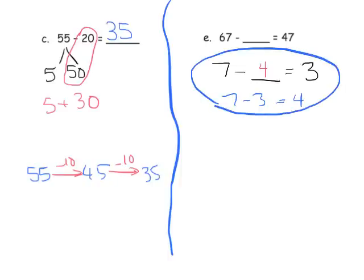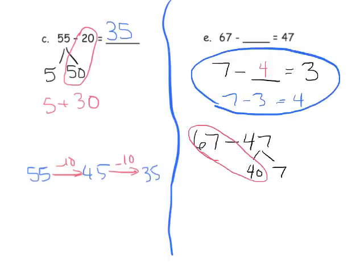Once students understand they need to do 67 minus 47, we can use the number bond method. We break 47 into 40 and 7. Now we do 67 minus 40 — students might use the arrow method here to get 27 — and then 27 minus 7 gives us 20.